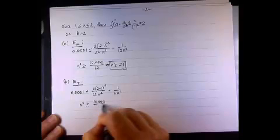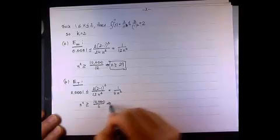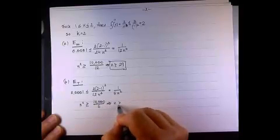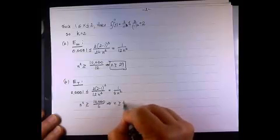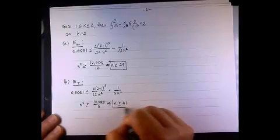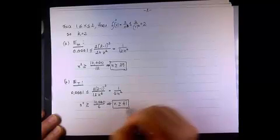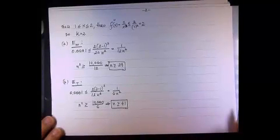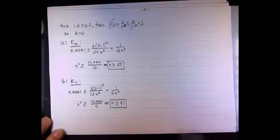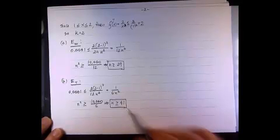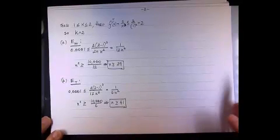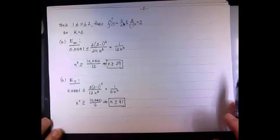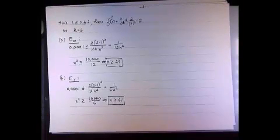And therefore, n squared is greater than or equal to 10,000 over 6. And therefore, n by itself has to be greater than or equal to 41. And you can see that to maintain the same accuracy, but using the trapezoidal rule, I need to increase the number of subintervals to at least 41.